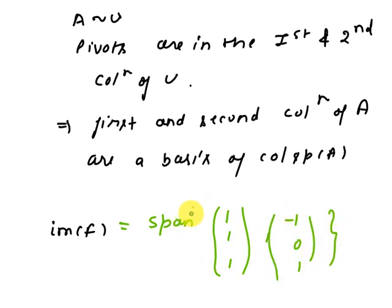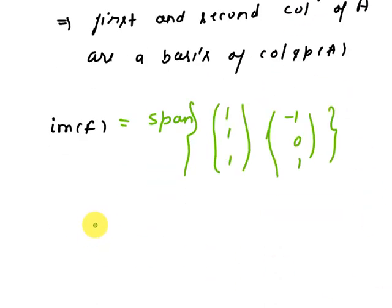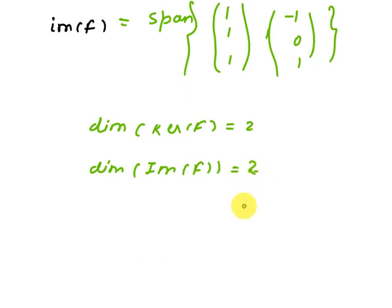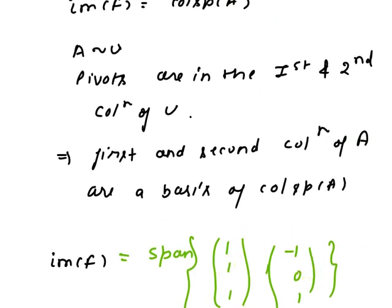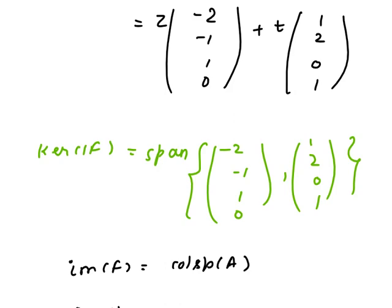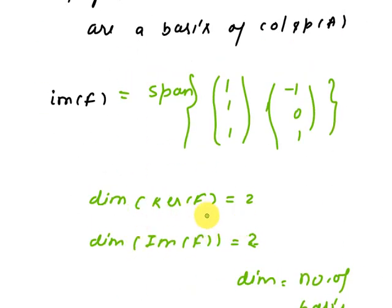And next, find the dimension. Dimension of kernel F is 2, and dimension of image of F is also 2. Because by the definition, dimension is equal to number of bases. Here number of bases is 2 and here number of bases is 2. So dimension is 2, dimension of kernel is 2 and dimension of image is 2.